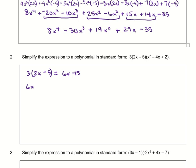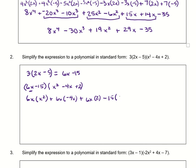So I need to take that 6x minus 15 and multiply it by the third expression, which was x² minus 4x plus 2. I'm going to take the 6x and distribute it to all the terms: 6x times x², plus 6x times negative 4x, plus 6x times 2. Then distribute the negative 15: minus 15 times x², minus 15 times negative 4x, minus 15 times 2.